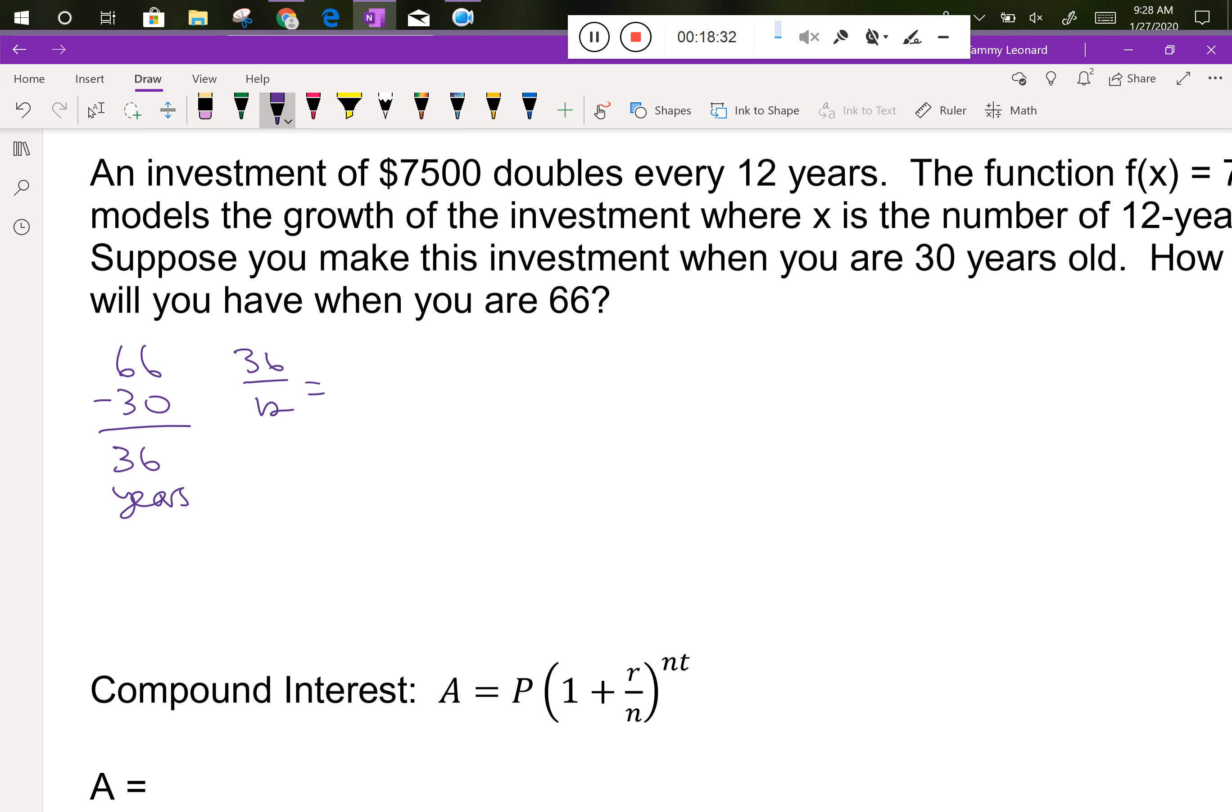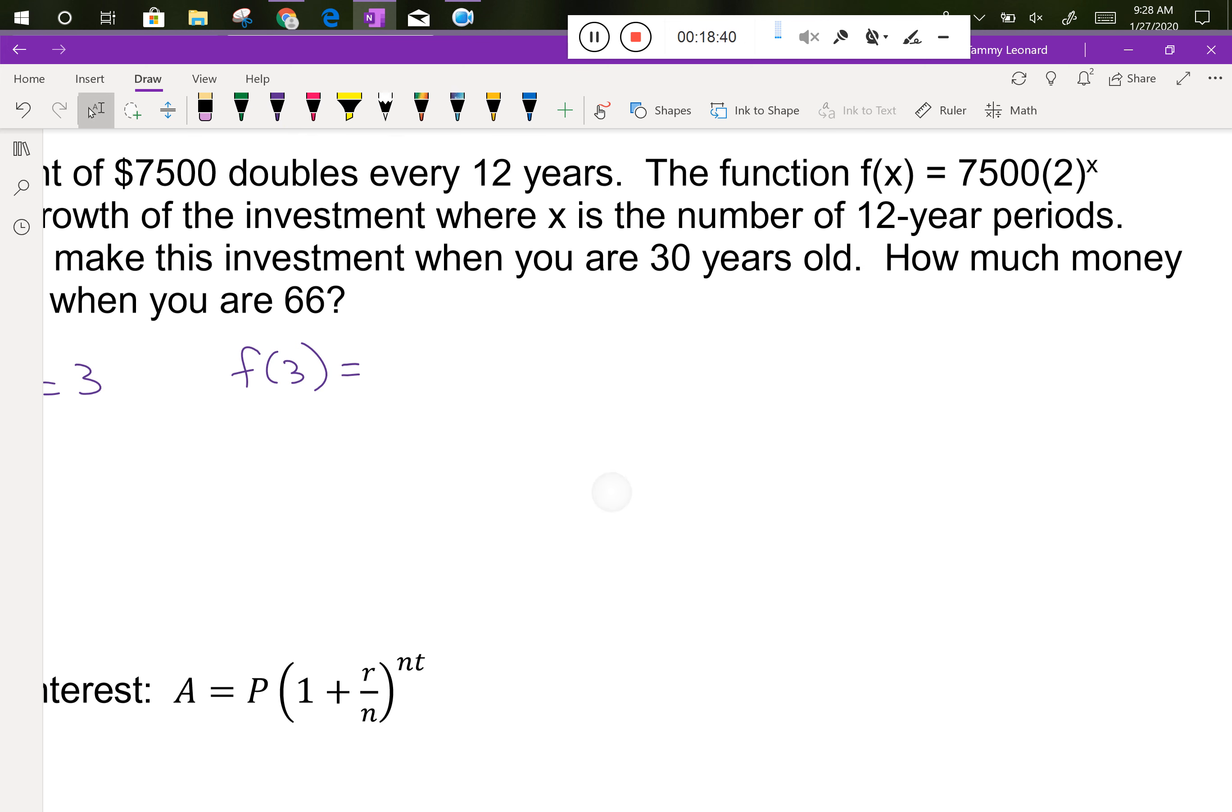Now I've got to do the division, right? Because I need to know how many 12-year periods. So 36 divided by 12 is 3. So I'm doing f(3). So f(3) says take 7,500 and raise 2 to the third power. Well, that's easier than 2 to the eighth, right? 2, 4, 8. So this is 7,500 times 8. How much money will we have when we're 66?